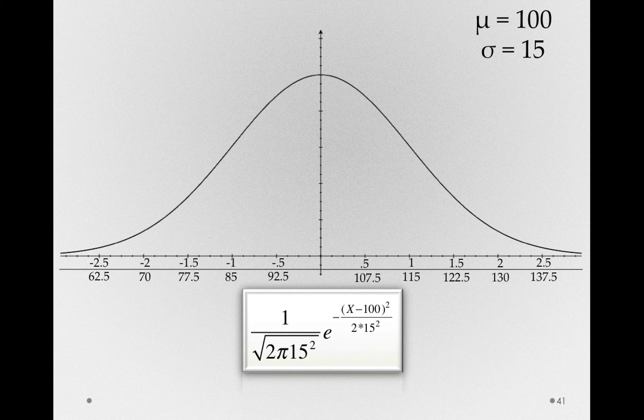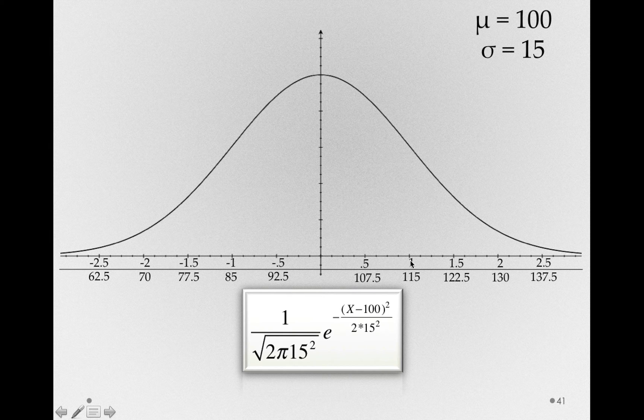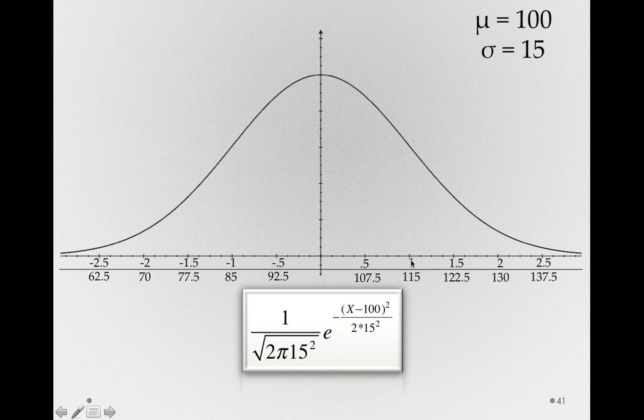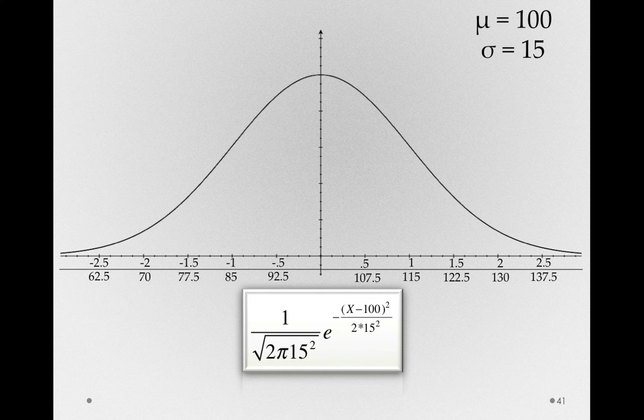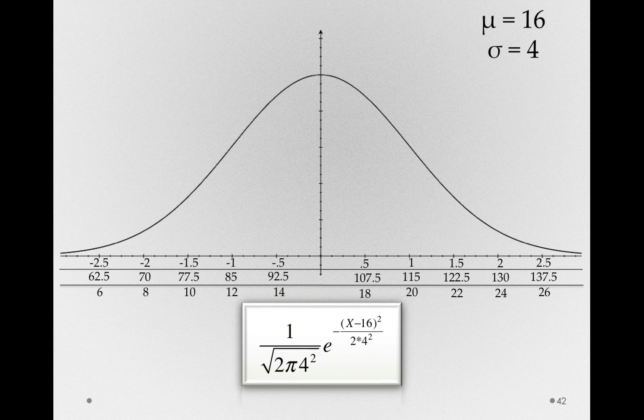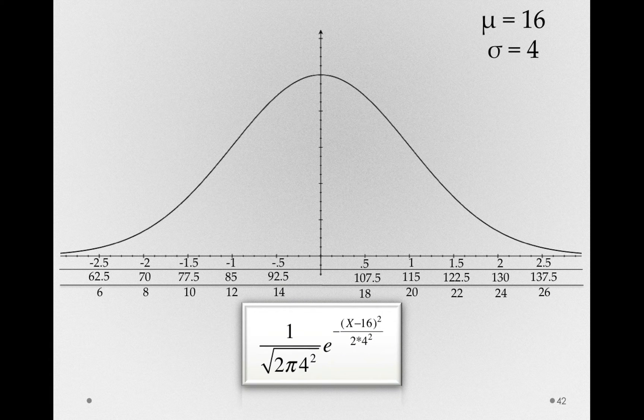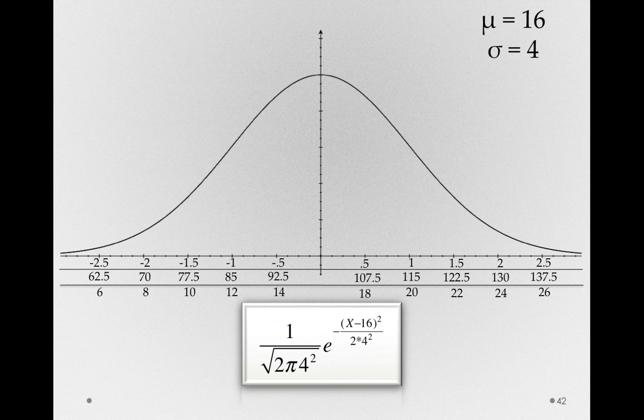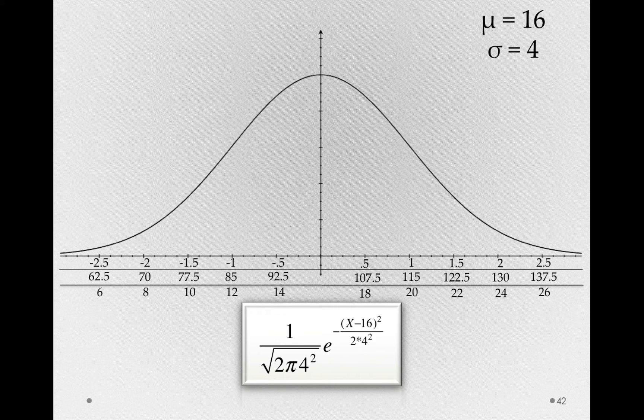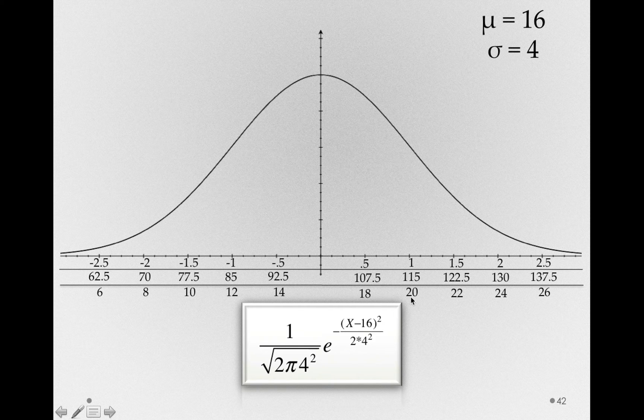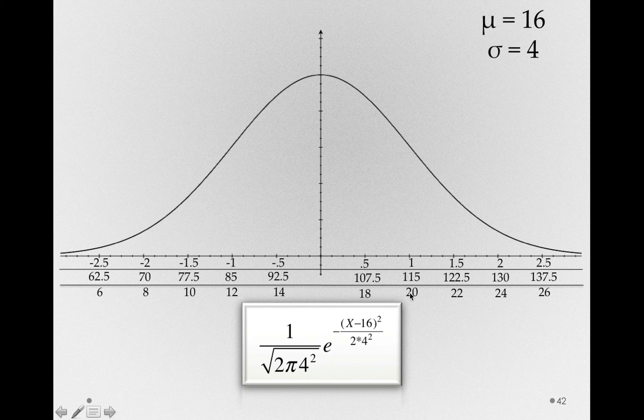That is, a location of 1 for that first distribution, which actually happened to be the z-distribution, is really the same location as 115. Let's try the BDI distribution, a mean of 16 and a standard deviation of 4. Notice again, I didn't have to redraw this distribution. Instead, I just added another axis. All of these locations are, in essence, the same place on a normal distribution.